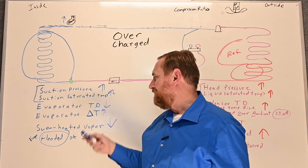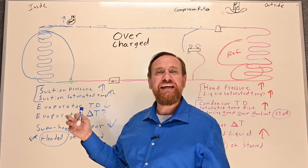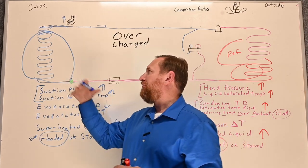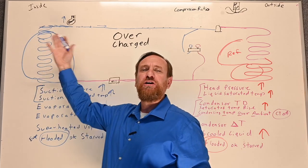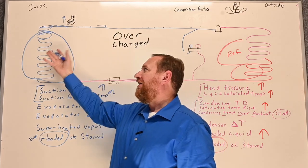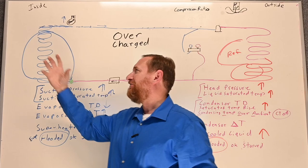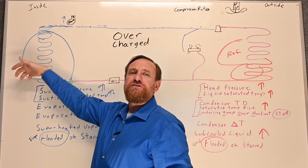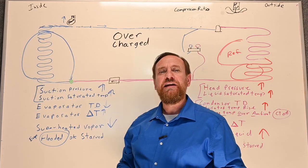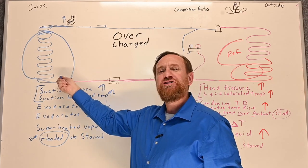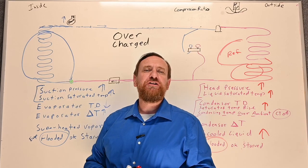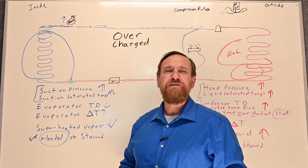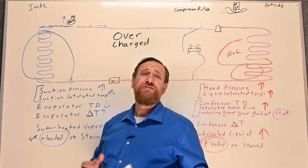A lot of people overcharge systems because they only look at the evaporator delta T number. They think if they force more refrigerant into that evaporator coil, they get more saturation and absorb more heat — and to an extent they are absorbing some more heat, dropping the air temperature more. But because your saturated temperature is higher, it's also farther away from the dew point, which means less dehumidification. And we know that's going to be an issue — dehumidification is essential for air conditioning.